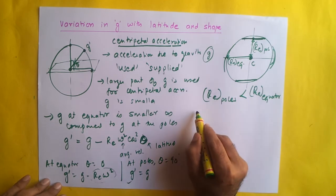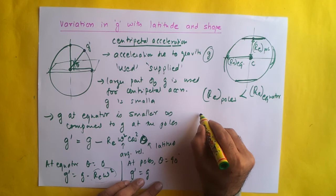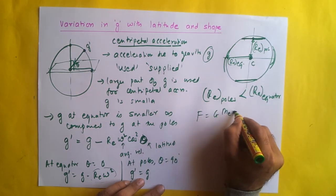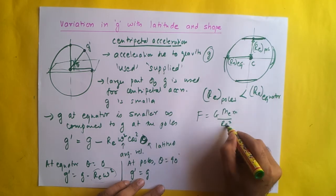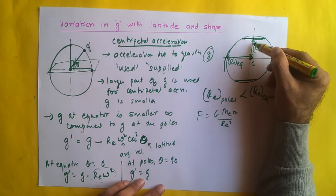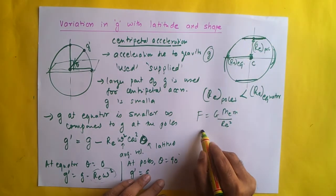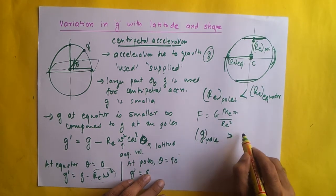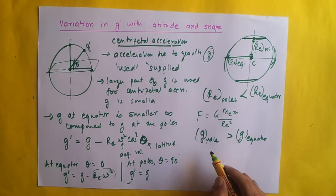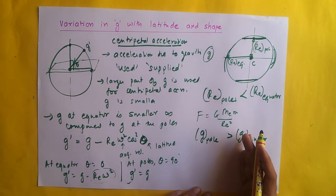We know the gravitational force in the case of earth is inversely proportional to R_e squared — F equals G times M_e times m divided by R_e squared — so it is inversely proportional to R. Therefore, at the poles since the distance is very small, the gravitational force is more and therefore the gravitational acceleration is more. So G at the pole is greater than G at the equator. The same conclusion we observed with latitude we are also observing here with shape.